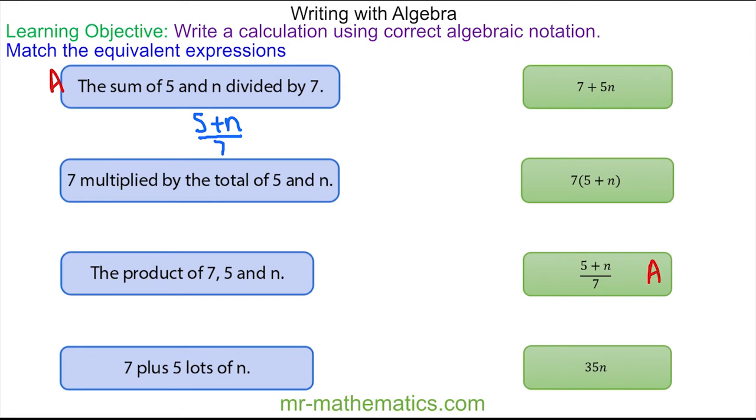For the next one, 7 multiplied by the total of 5 and n. We're going to work out the total of 5 and n, which is 5 add n, and then we are multiplying it by 7. To multiply this expression by 7, we put this into brackets and we have 7 on the outside, so this will match with this one.